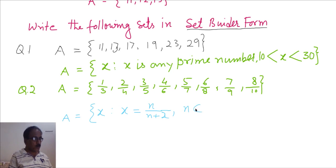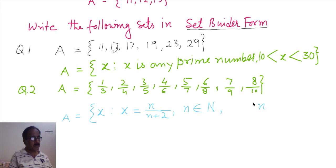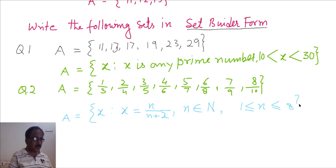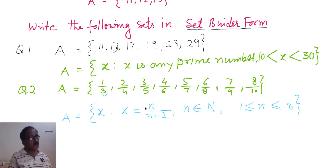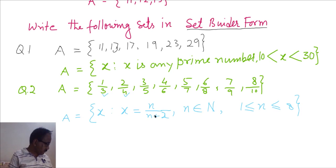This N belongs to natural numbers. Here N is 1, 2, ..., 8. Suppose in place of N, when you put 1: 1/(1+2) = 1/3 — that first element. When you put N = 2, you get the second element. So in set builder form, we should mention the property of that particular set.